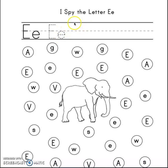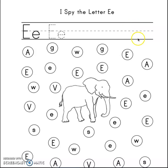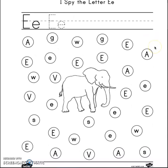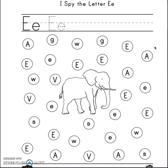One more time — trace letter E, sounds 'e.' And just one more time: down, across, across, across. We're going to try to write letter E lowercase. It's difficult, isn't it? But just keep trying, okay? I know with time you will make it.